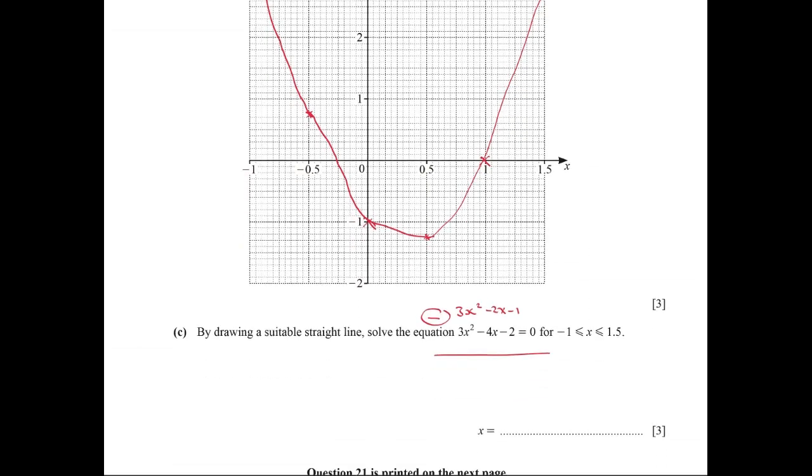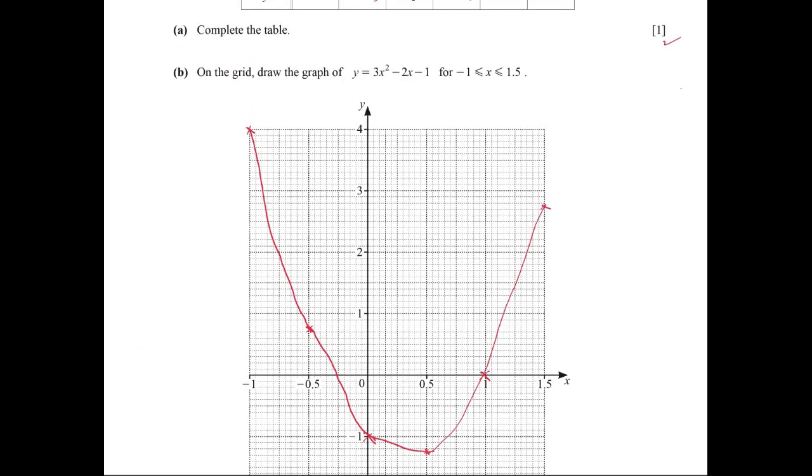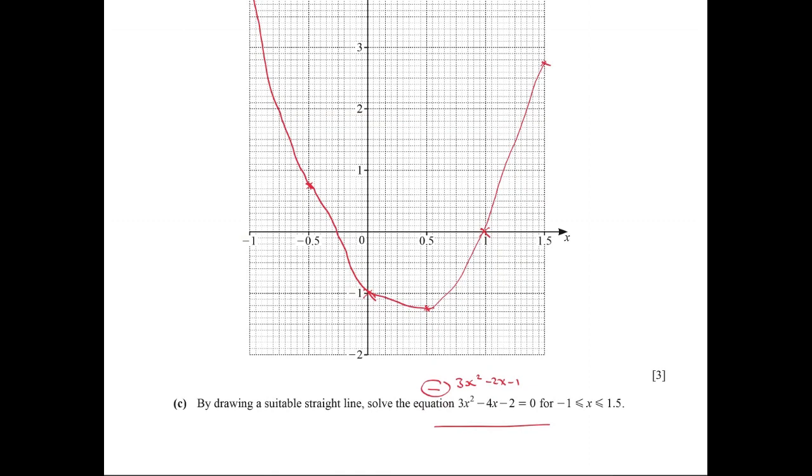To know the line, we have to subtract the original equation from the equation given below. The original equation is 3x² - 2x - 1 = 0. By subtracting from the equation given below...